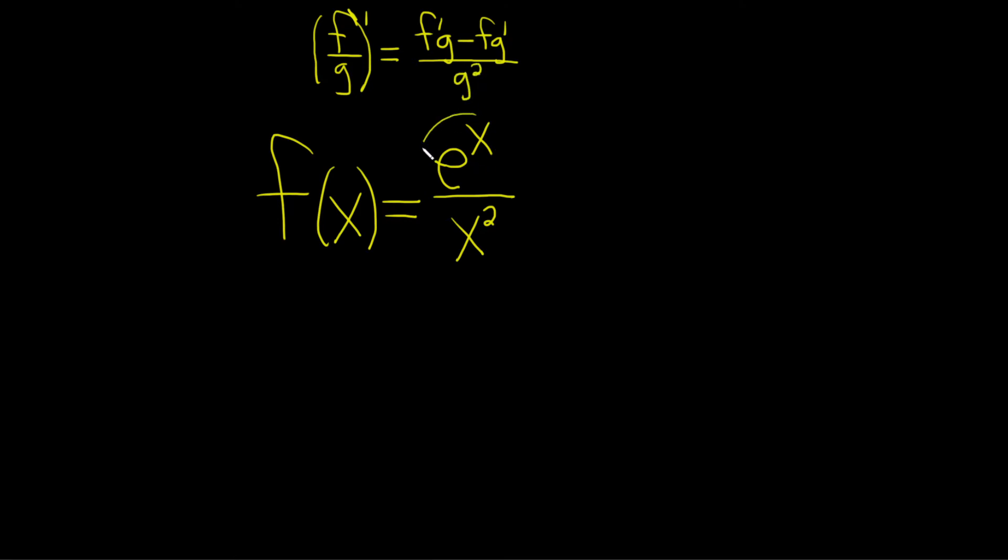So in our example here, e to the x is our top function, and x squared is our bottom function. So let's go ahead and apply the quotient rule.